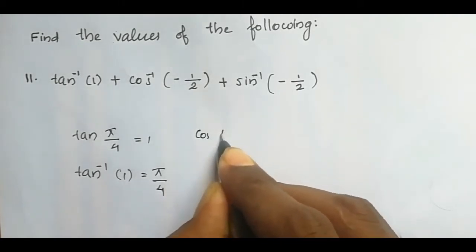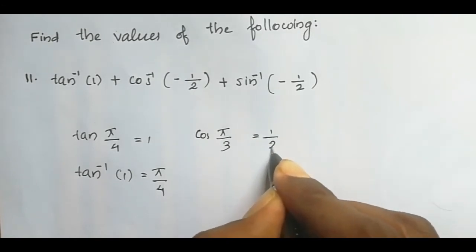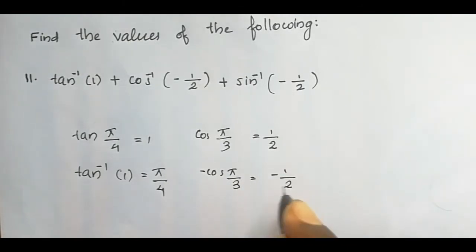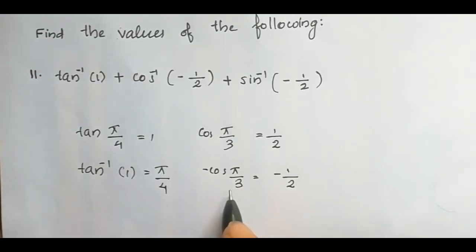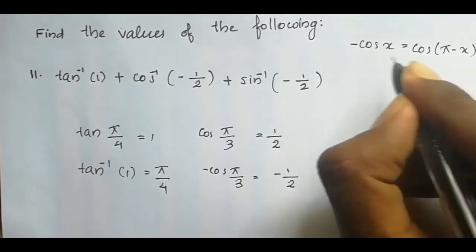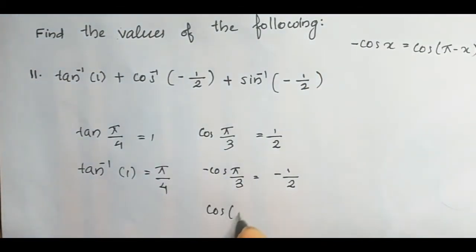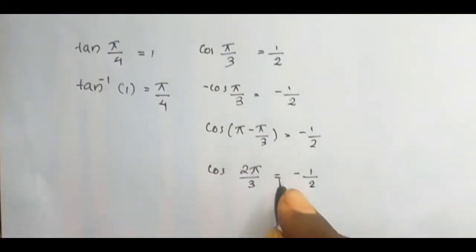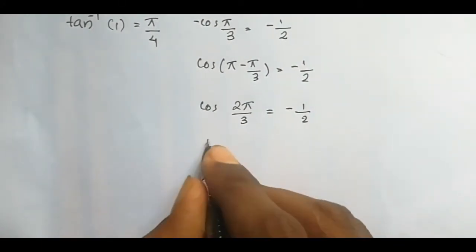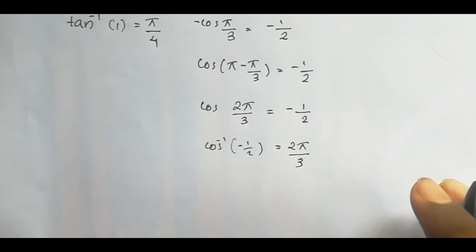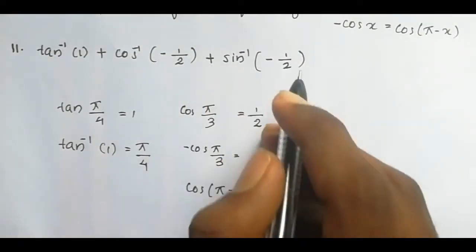For cos⁻¹(-1/2): using the identity cos(π - x) = -cos(x), we get cos(π - π/3) = -1/2, which equals cos(2π/3) = -1/2. Therefore cos⁻¹(-1/2) = 2π/3.